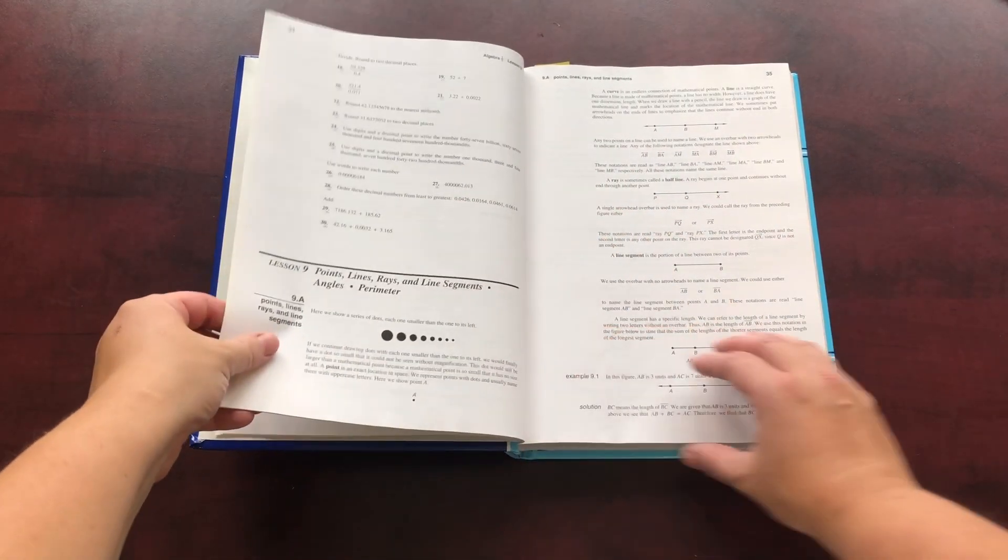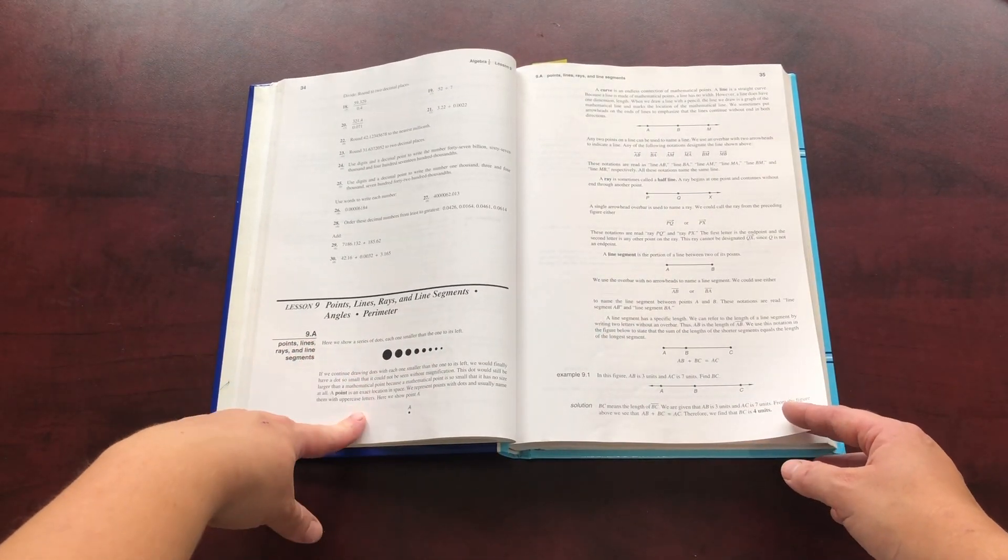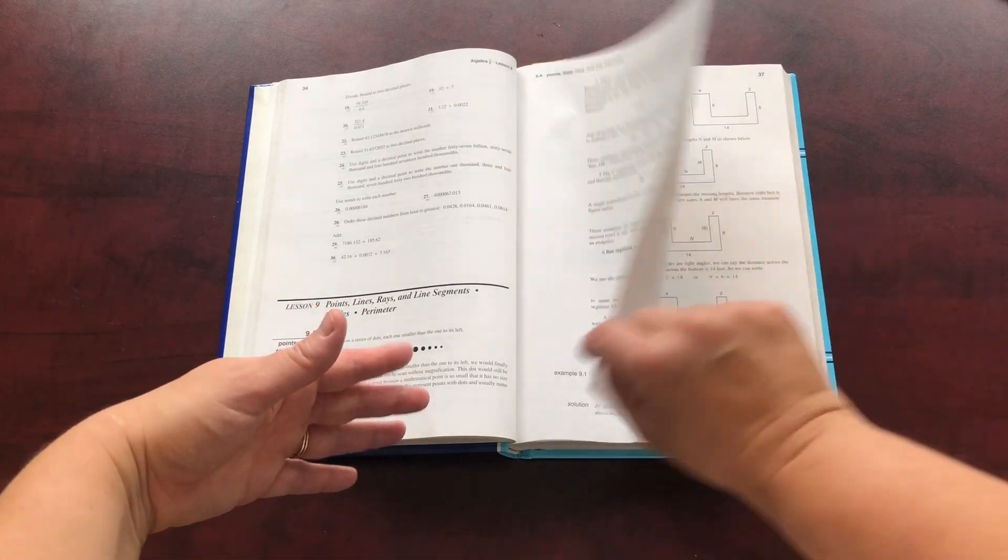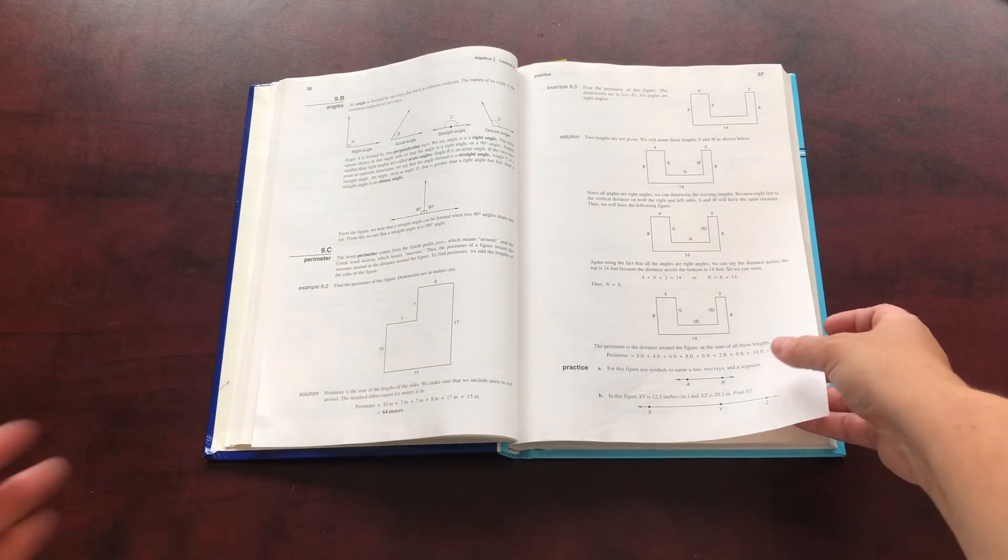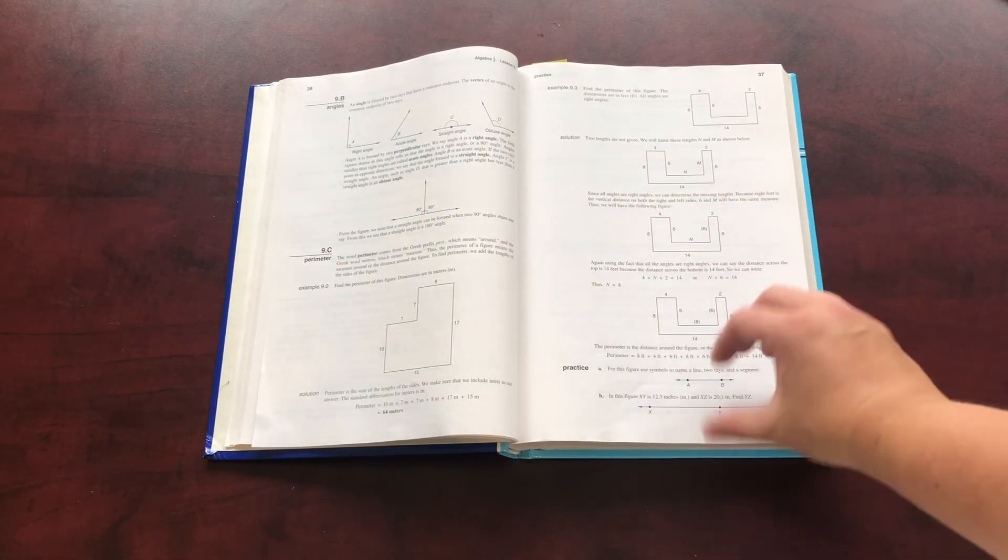So let's jump to a lesson here. Let's say lesson nine. So here's the first part. They give you examples. They explain it. They give you the solutions to the examples. So this is all part of one lesson. And then there's the practice section, which you're practicing what you just learned.